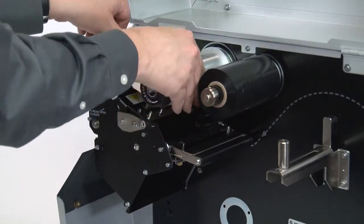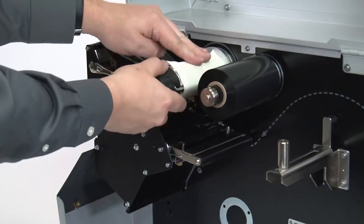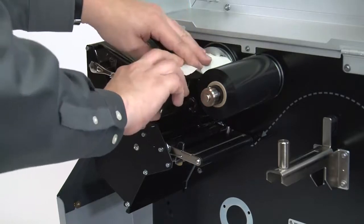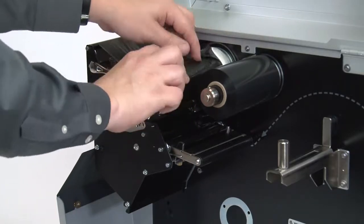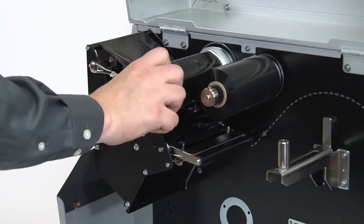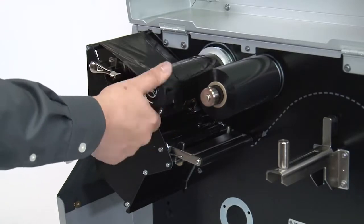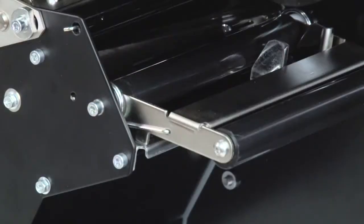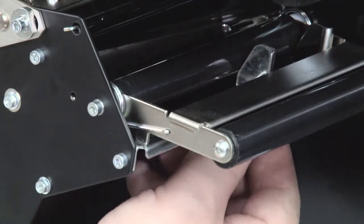Wind the ribbon leader and attach the ribbon counterclockwise around the ribbon take-up spindle. Turn the spindle to remove any ribbon slack. Loosen the thumb screw located on the bottom of the outer media guide.